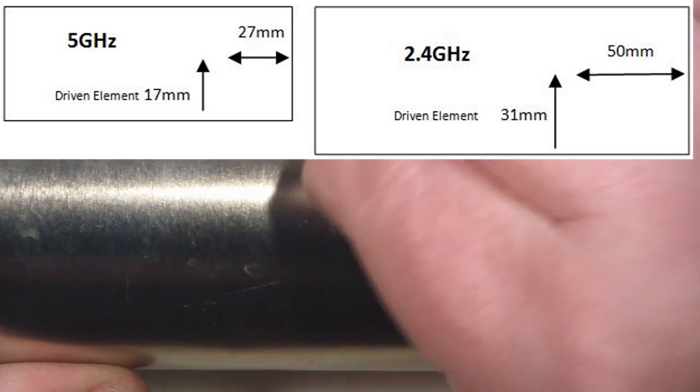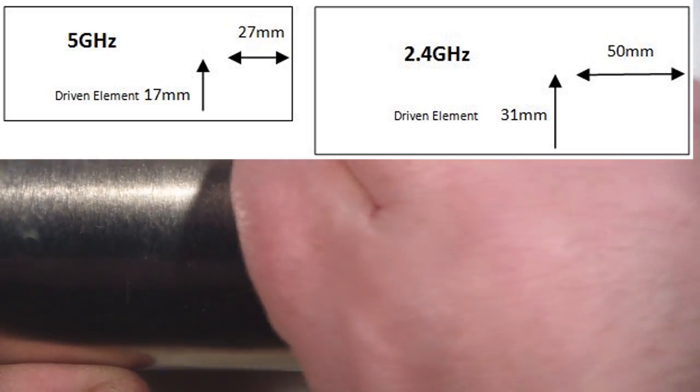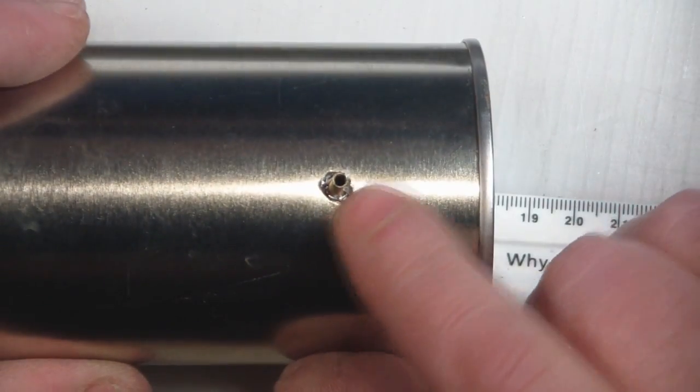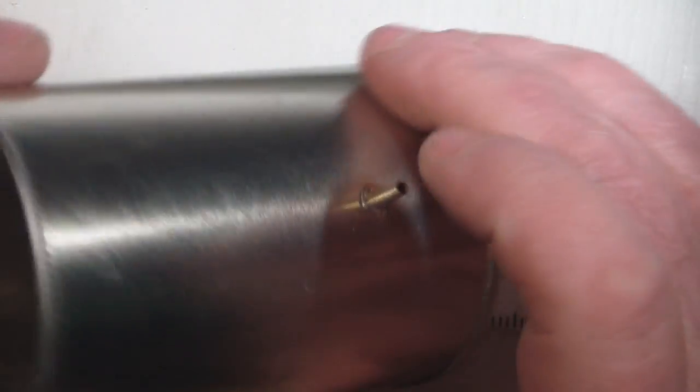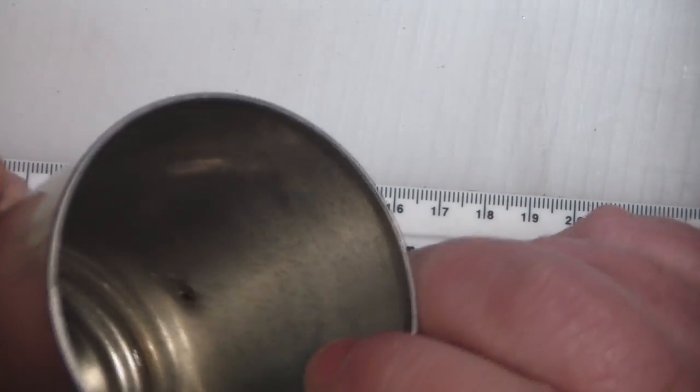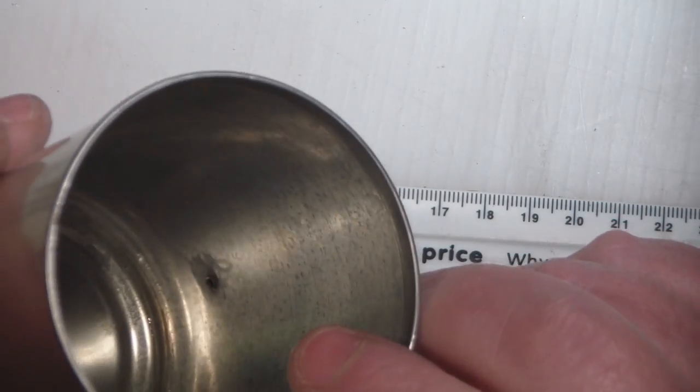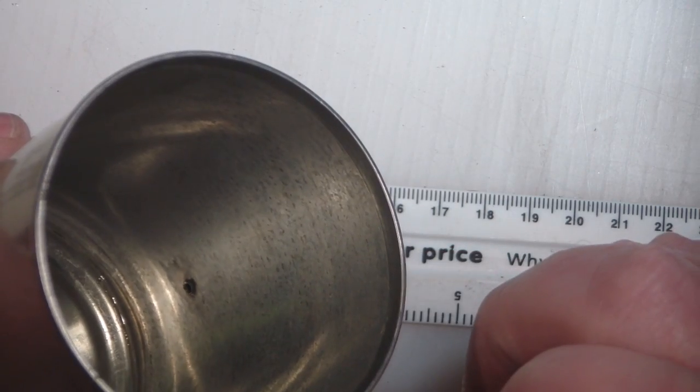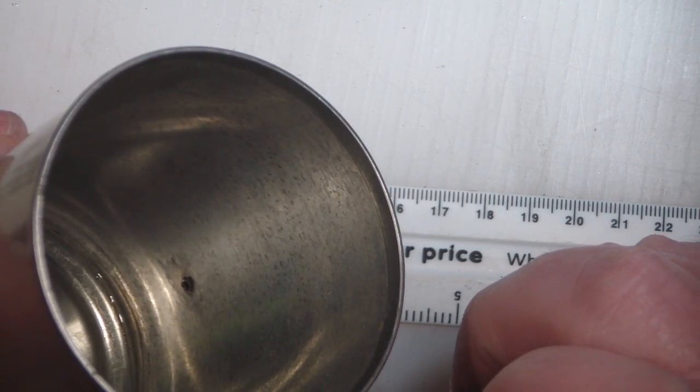You want to get it as level as possible inside the can because if you have it protruding out too much, that will affect the actual wavelength of the cantenna.